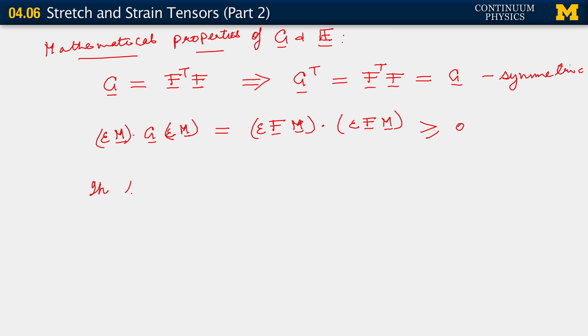And in fact, epsilon M dot C epsilon M is equal to 0 if and only if epsilon itself equals 0. But if epsilon itself is equal to 0, it means that the original vector that we were testing here was of 0 magnitude anyway. That's the only situation under which this product would turn out to be 0. This quadratic product would turn out to be 0.